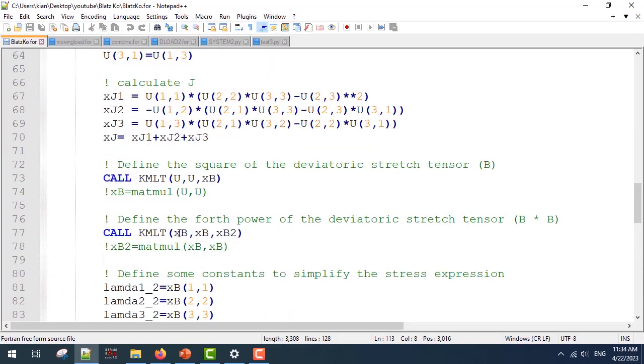The same goes for the b power 2 matrix, which I've defined here. Again, if you don't have this KMLT subroutine or your own written subroutine, you can simply use the MATMUL built-in function.